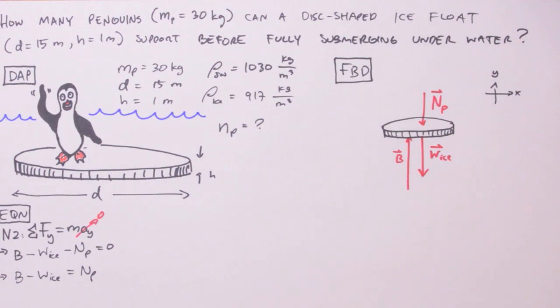Next we'll apply Archimedes' principle, and Archimedes' principle states that for a fully or partially submerged object, the buoyant force on that object is equal to the weight of the displaced fluid. So for B we're going to write W displaced.